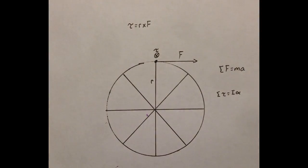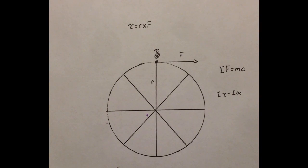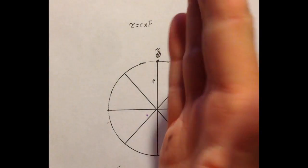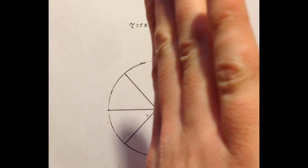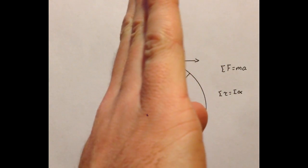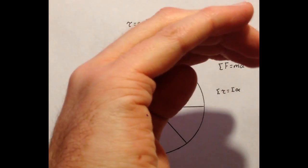Now, the same exact principle is used for wheels also. I align my fingers with the radius, and this is actually going to require that I rotate my wrist downwards like this, because whenever I align my fingers with the radius, I then need to curl them towards the force.